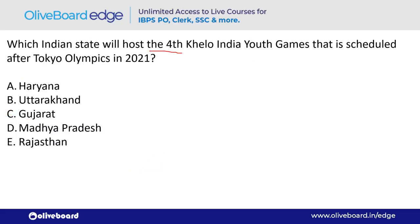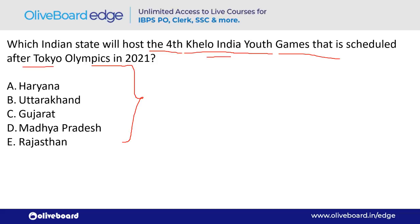Which Indian state will host the 4th Khelo India Youth Games scheduled after the Tokyo Olympics in 2021? The answer is Haryana — option A. Remember: 4th edition, to be held in 2021.